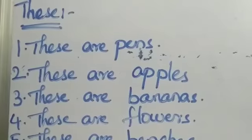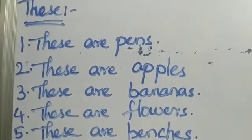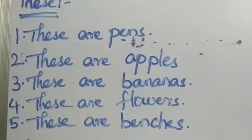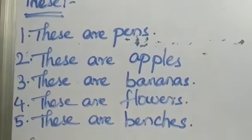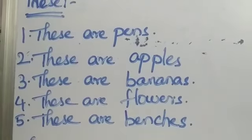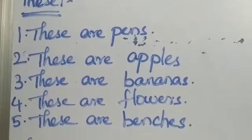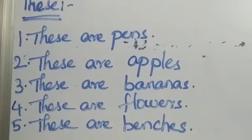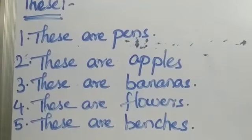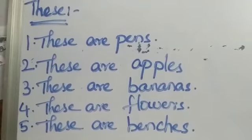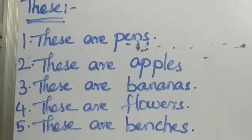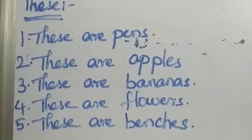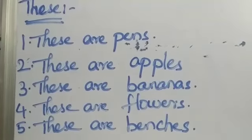Examples based on 'these': these are pens, these are apples, these are bananas, these are flowers, these are benches. When you use the word 'these,' it should be followed by 'are.' In present tense, the objects are in plural form. You cannot write 'these is' — with 'these' you must use 'are.'